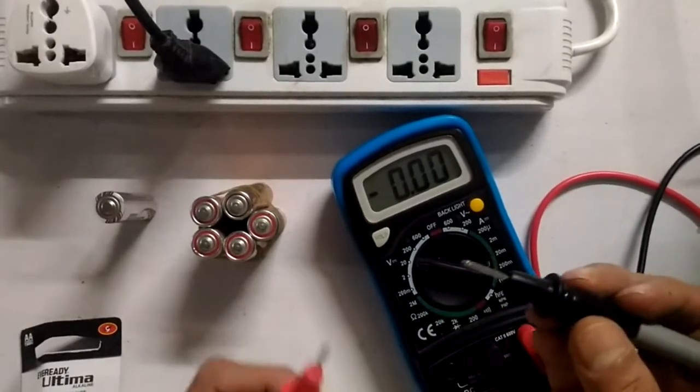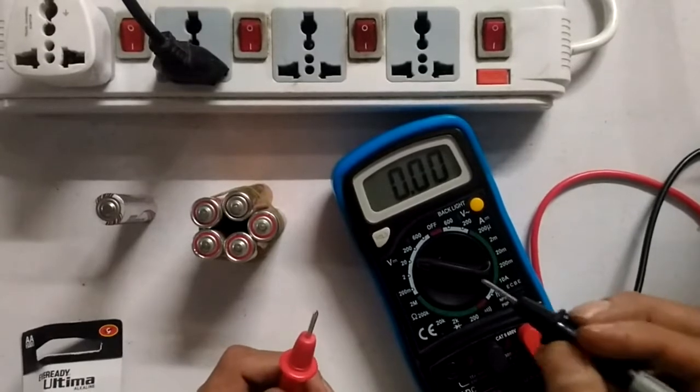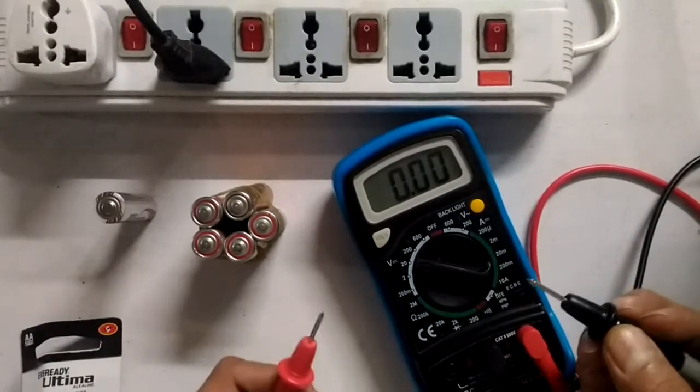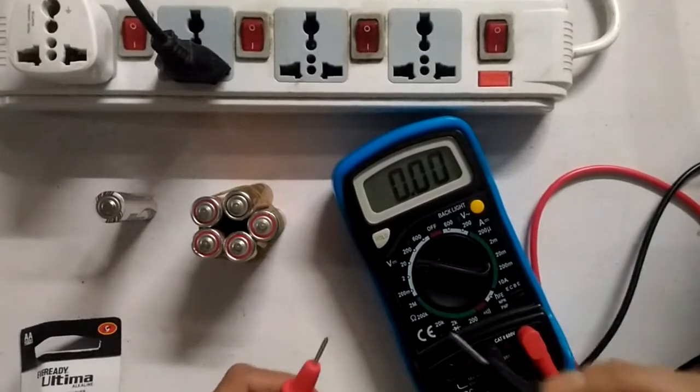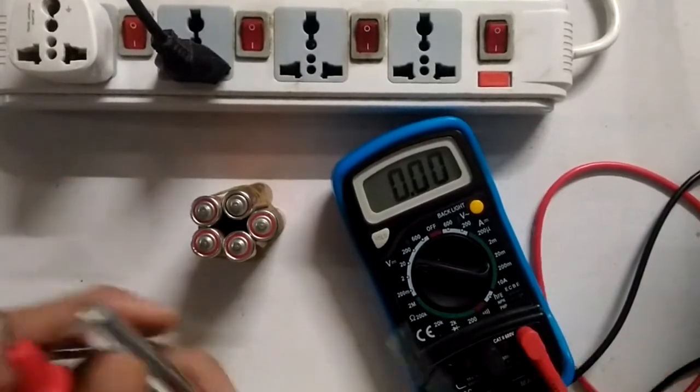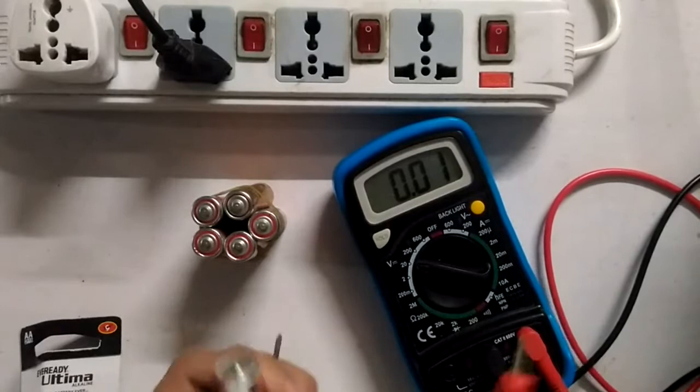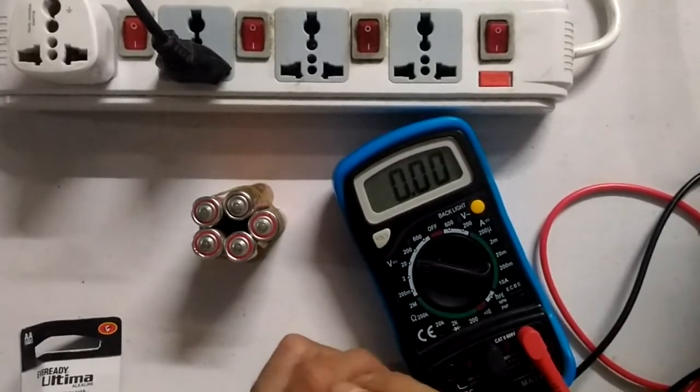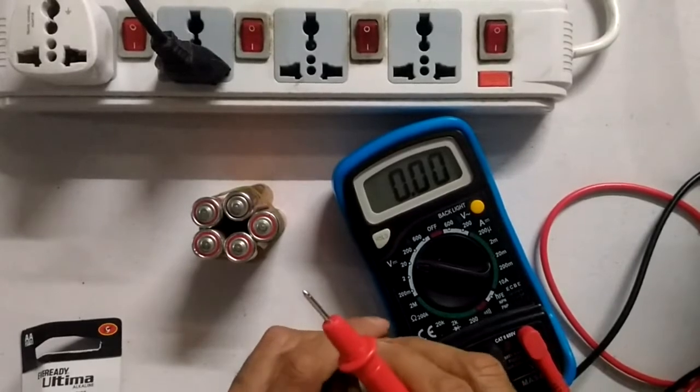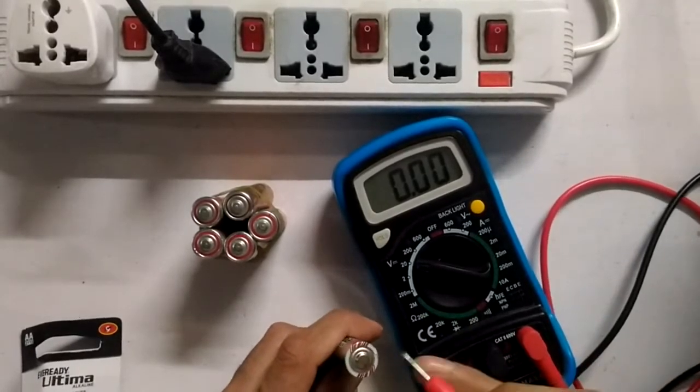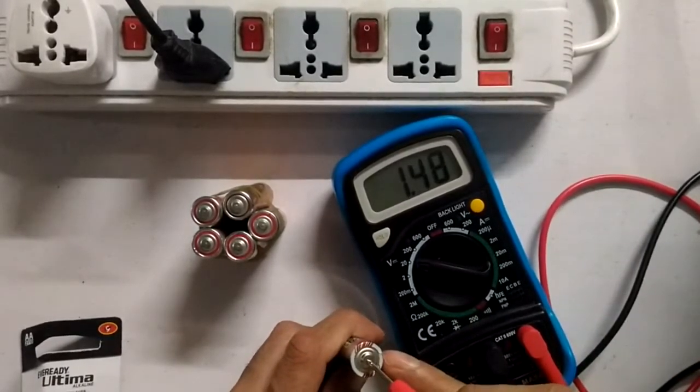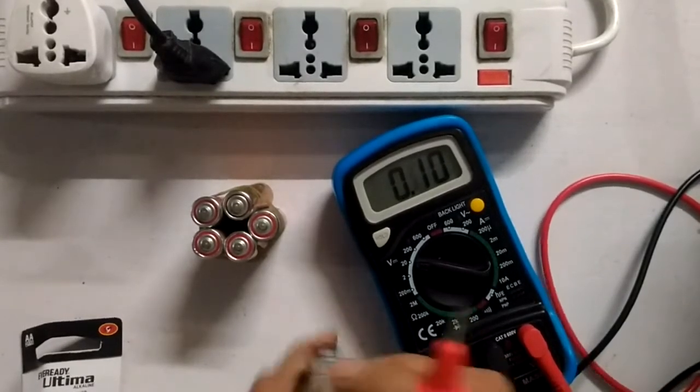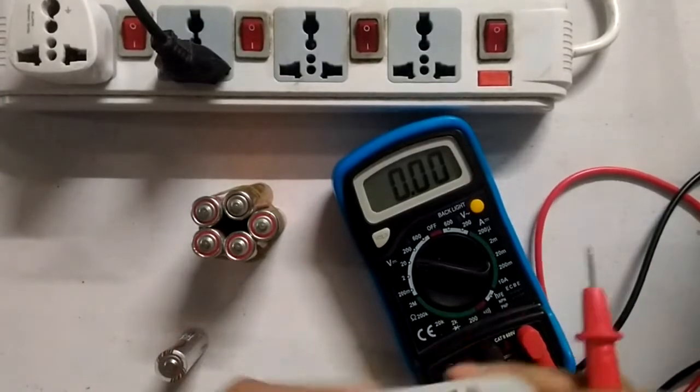So here, this is the somewhat used cell and here it's showing me 1.48 volts. Okay, and this is a fairly new one. I'm going to take out and let's check this. And here for this one we are getting 1.61 volt. Okay, good.